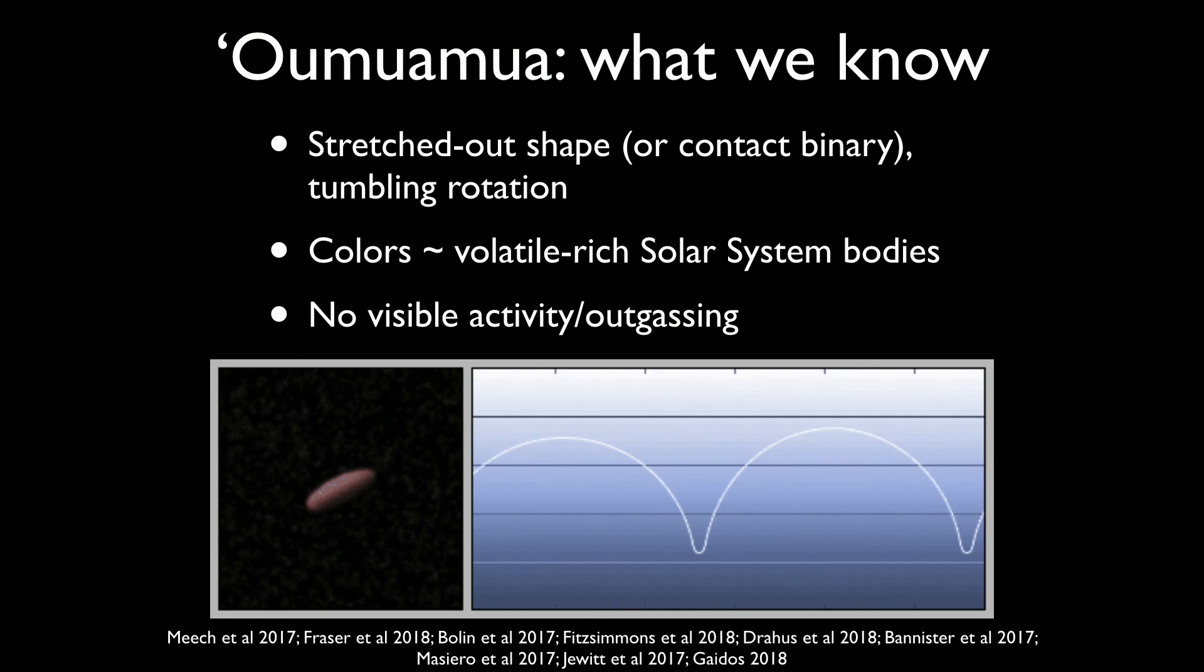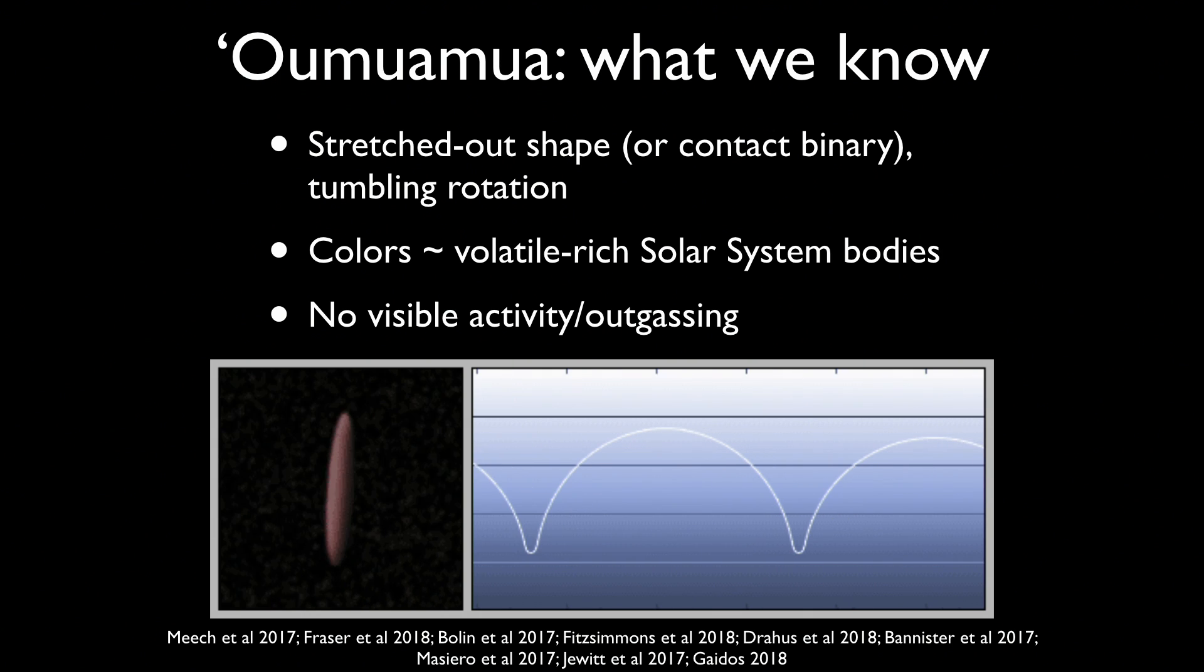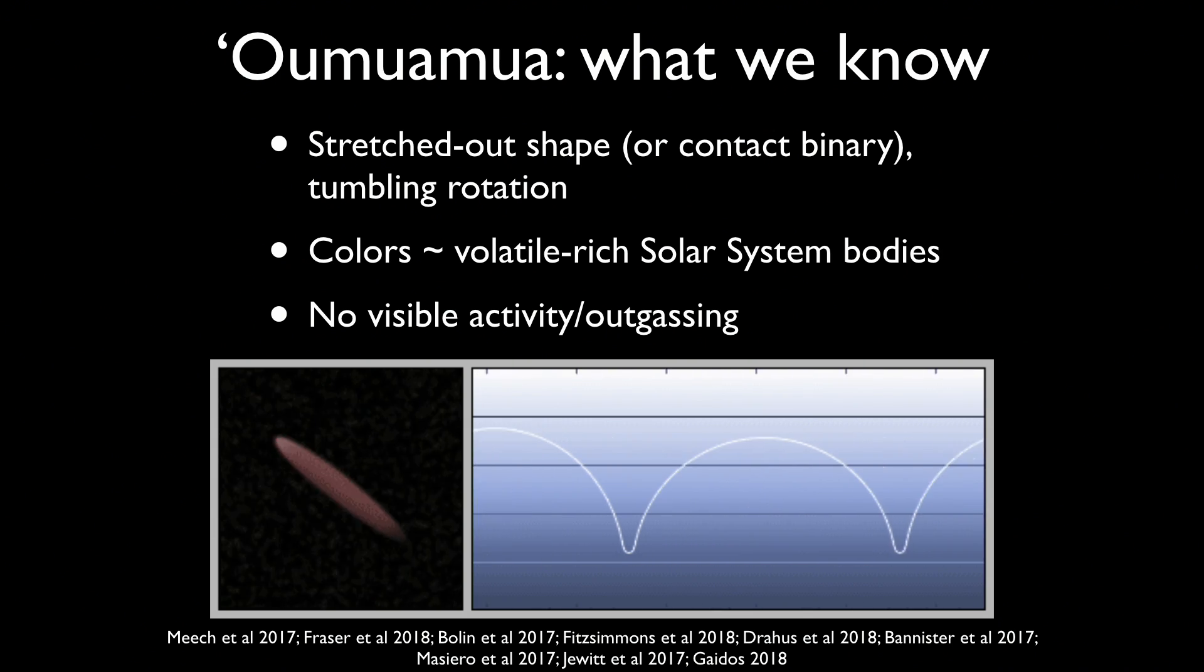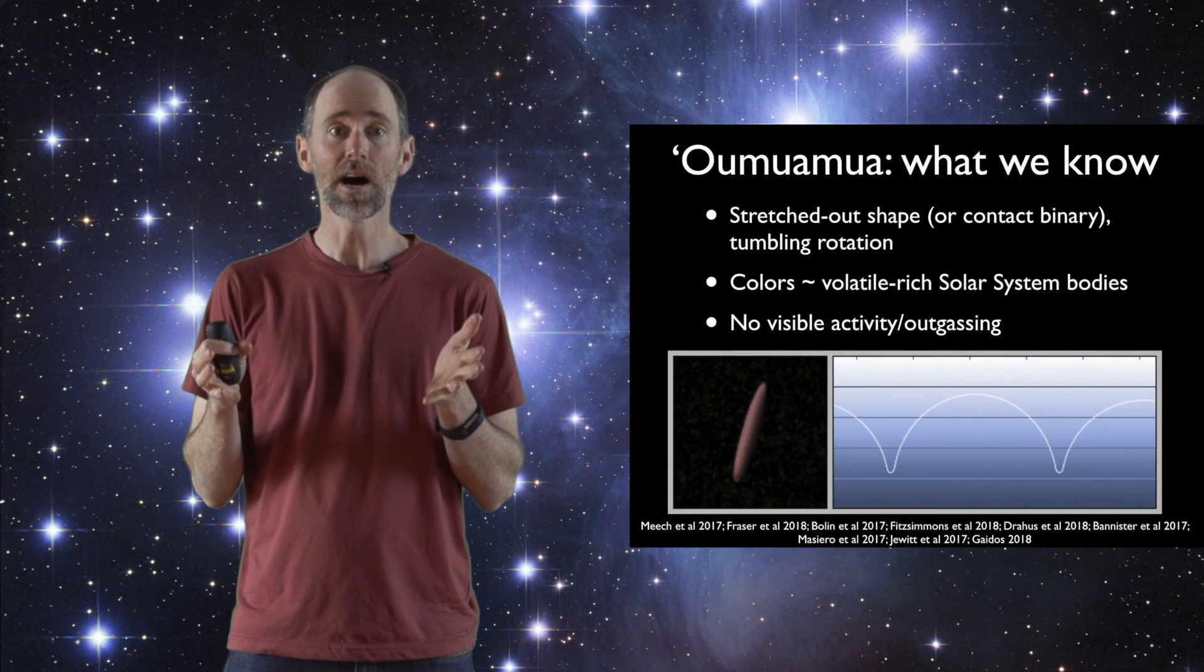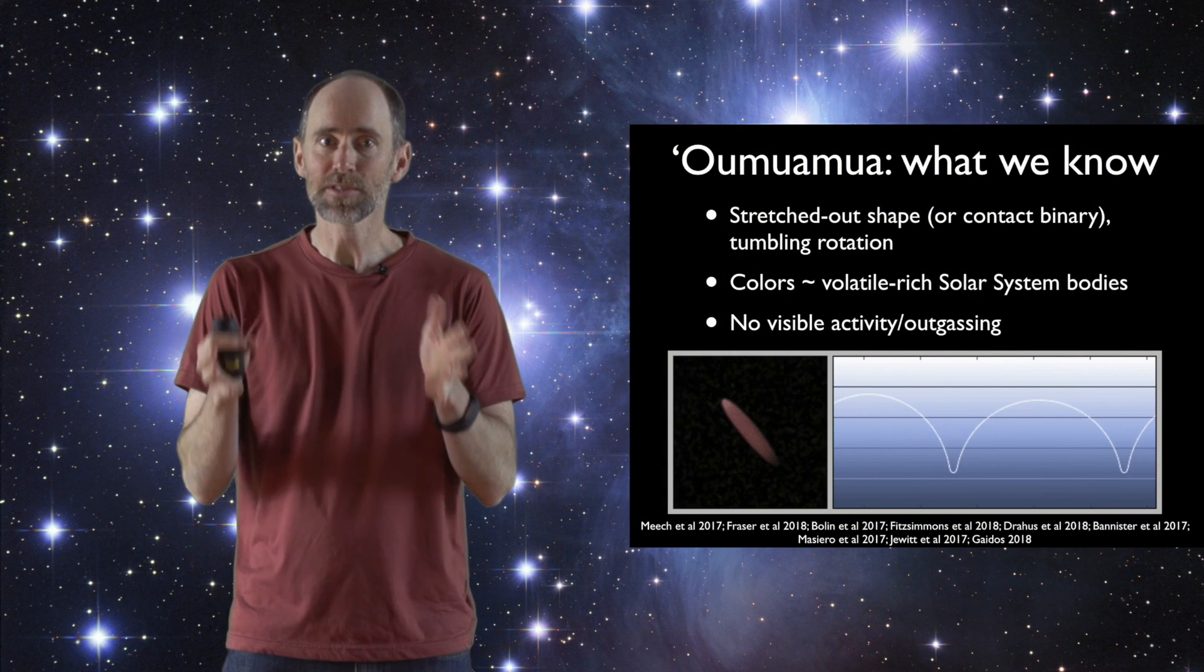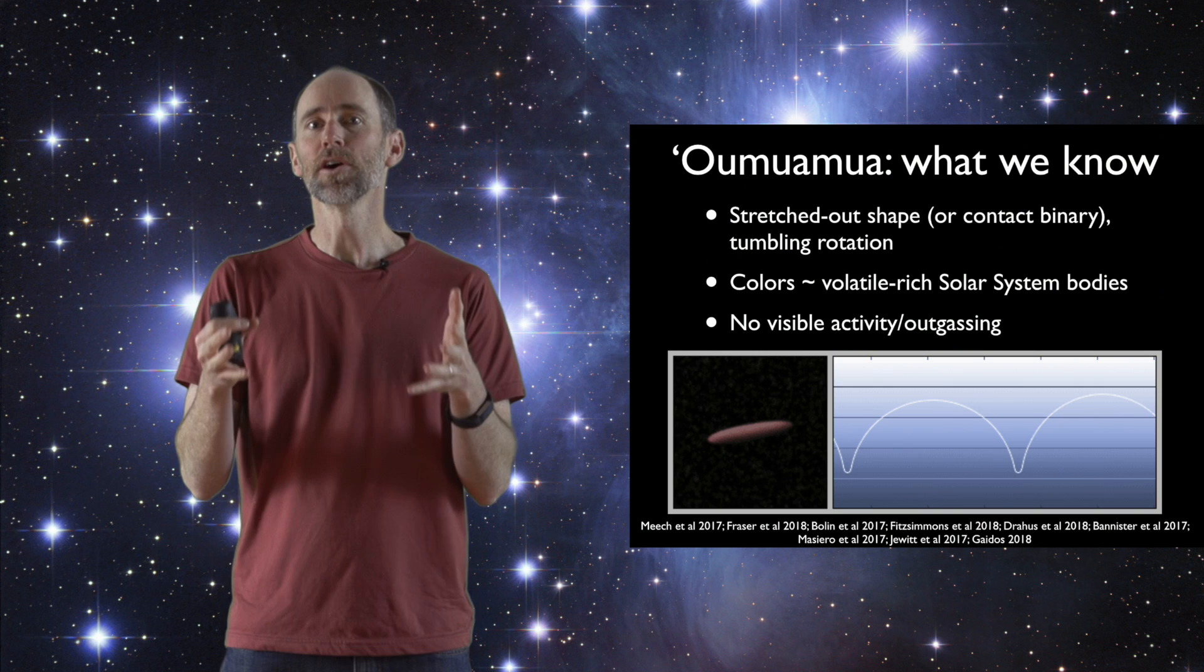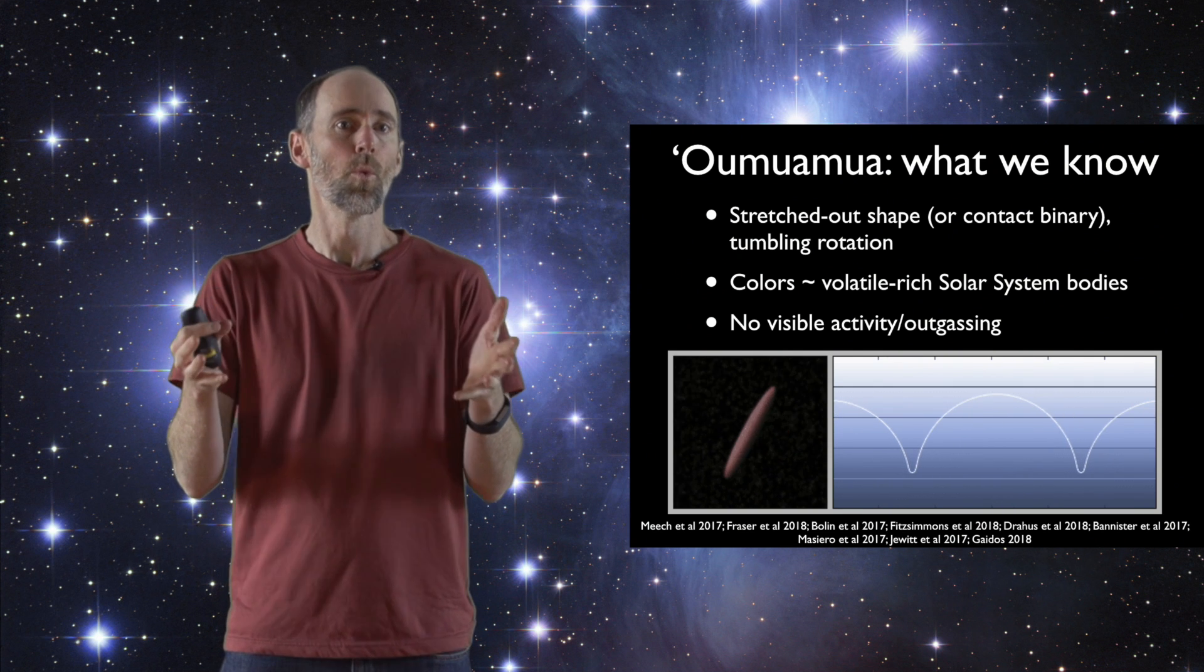Even though we don't see that shape directly, we just measure the brightness variations. We think it must be very stretched out like that and in this tumbling rotation. We can also measure its colors, and it looks a lot like a comet in terms of its appearance, or at least a volatile-rich solar system body like a water-rich asteroid.